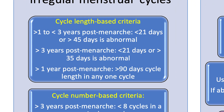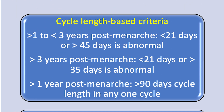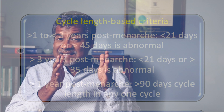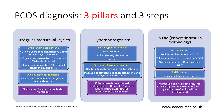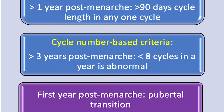For cycle length criteria: if the patient is more than one year but less than three years from menarche, a cycle shorter than 21 days or longer than 45 days is considered abnormal. If the patient is more than three years from menarche, less than 21 days or more than 35 days is abnormal. For the cycle number criterion, if the woman is more than three years from menarche and has fewer than eight cycles per year, that is also defined as abnormal.